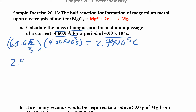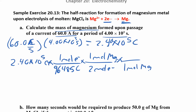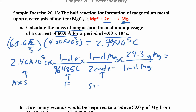Take 2.40 × 10⁵ coulombs and use Faraday's constant: 96,485 coulombs per one mole of electrons. Then from the half-reaction there are two moles of electrons for every one mole of magnesium. Convert moles to grams using the molar mass, 24.3 g/mol. So we have: amps × seconds for charge, Faraday's constant, stoichiometry from the reaction, and molar mass. Multiplying top over bottom gives 30.2 grams of magnesium.